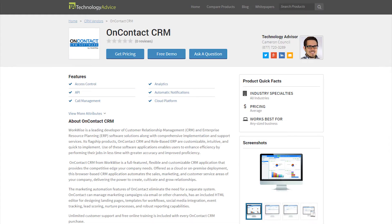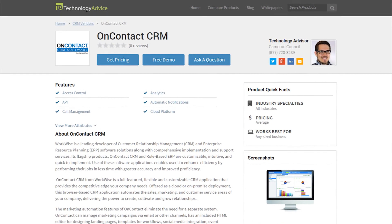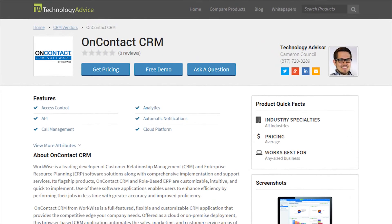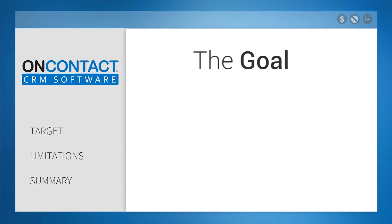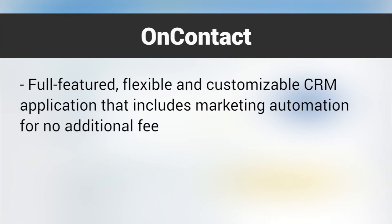This video review is for OnContact, software that looks to enhance efficiency by performing jobs in less time with greater accuracy and improved proficiency. The goal for OnContact is to help companies bridge the gap between their customer relationship management and marketing automation to optimize relationships. OnContact CRM is a full-featured, flexible, and customizable CRM application that includes marketing automation for no additional fee.